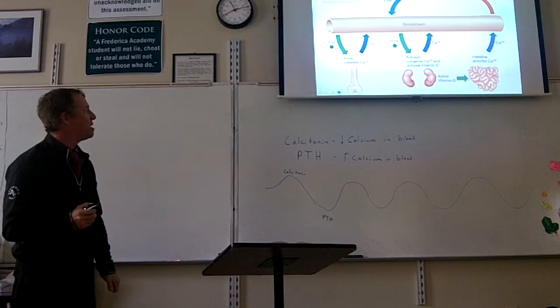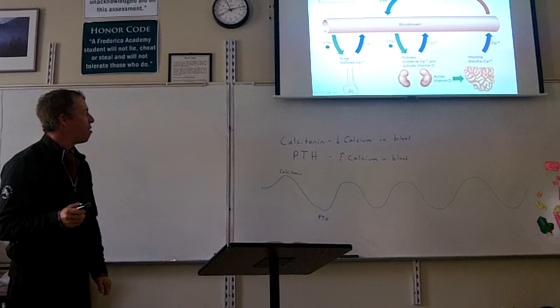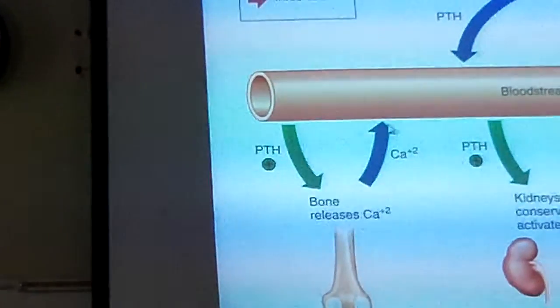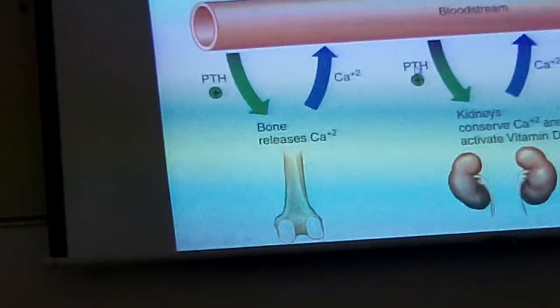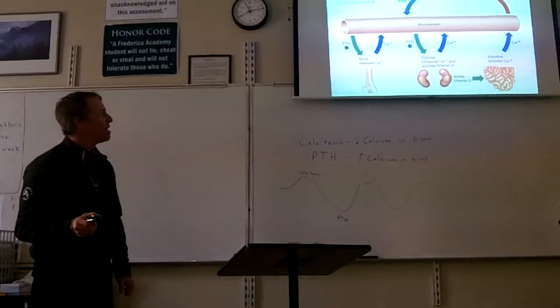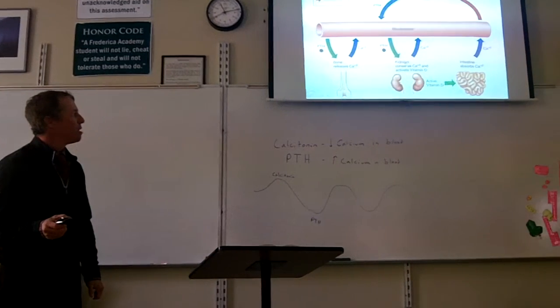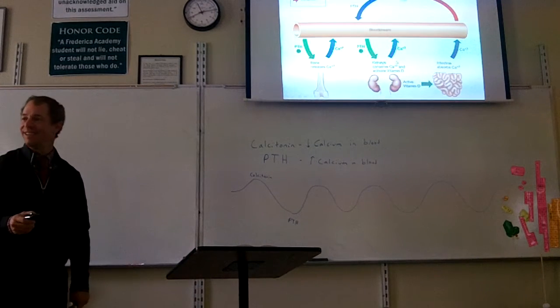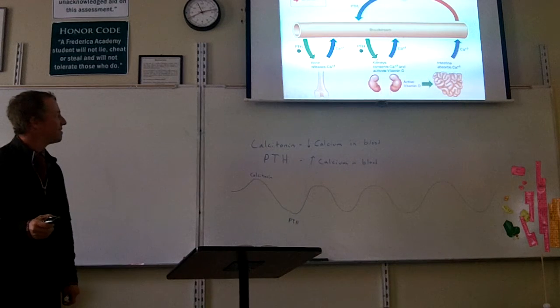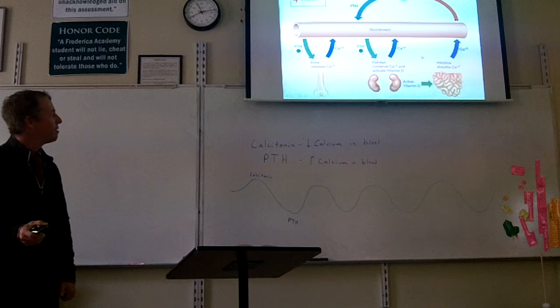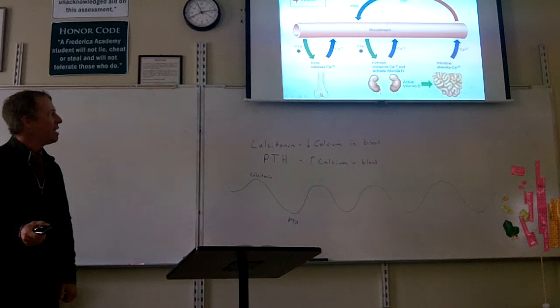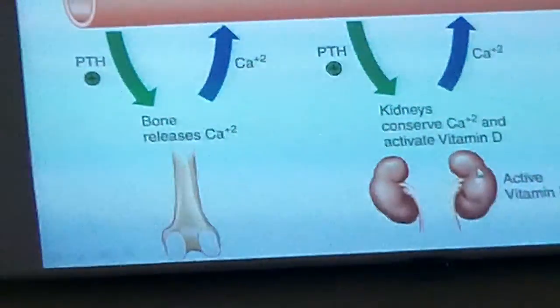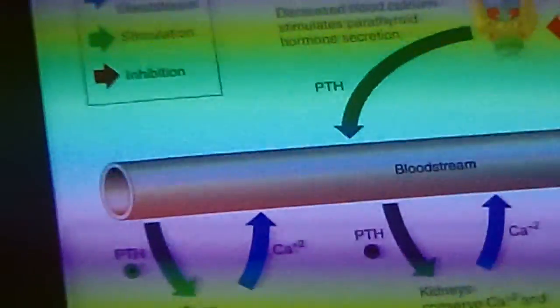Calcitonin is also released by the thyroid gland. So if your calcium level gets too high, here's a graph of the calcium levels. If it gets too high, what's released? If the calcium level in your blood gets too high, calcitonin is released, and that drives it down. And then if the calcium level gets too low, PTH is released, and that drives it back up.